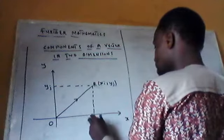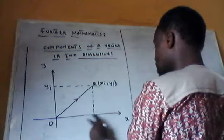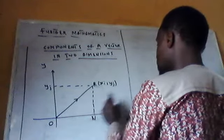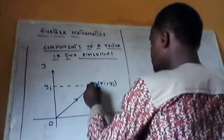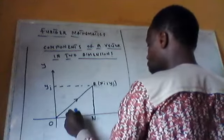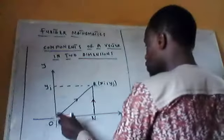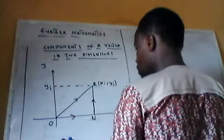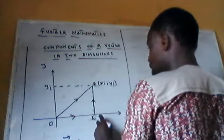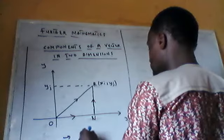Let's name this point N. Then, you know, from here — let me join something like this. The journey from O to R can be broken into: the journey from O to N, then from N to R. So vector OR equals vector ON plus vector NR.